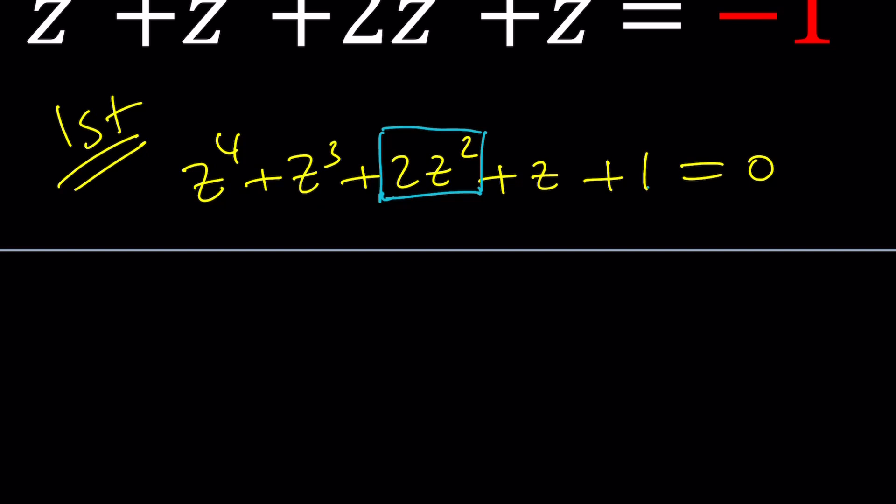I'm going to divide everything by z^2. Divide by z^2, which is in the middle. So if you divide z^4 by z^2, you're going to get z^2. If you divide z^3 by z^2, you're going to get z plus 2z^2 divided by z^2 is 2. And then if you divide z by z^2, you're going to get 1 over z. If you divide 1 by z^2, you're going to get 1 over z^2.